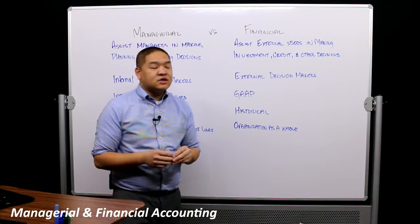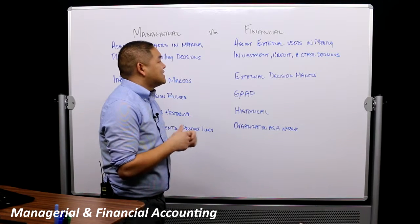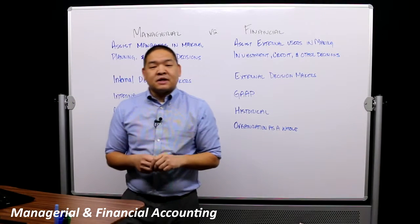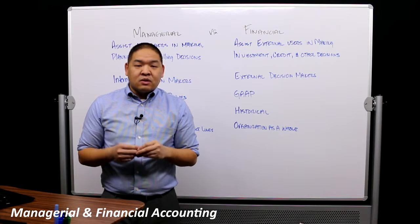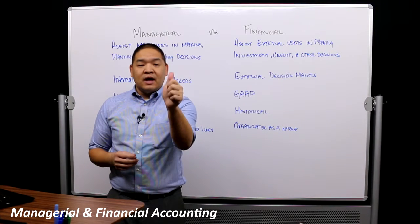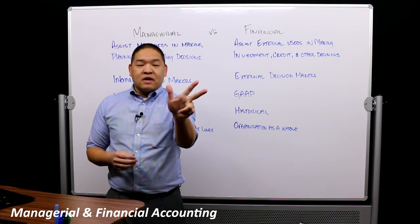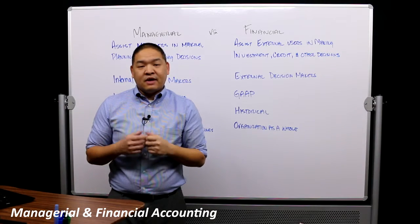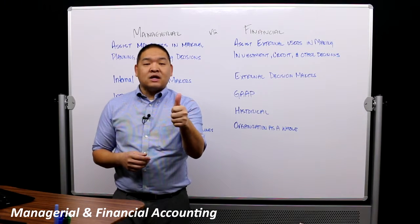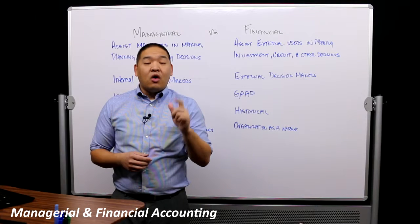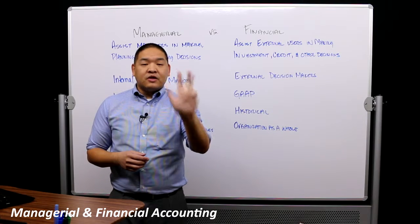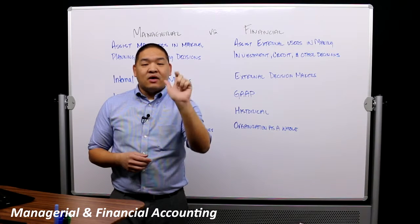Financial accounting is different — it's about assisting external users in making investment, credit, and other decisions. When it comes to financial accounting, we're talking about whether the external user is going to buy, hold, or sell. From an investor standpoint, they're deciding whether to buy more stock in the company, hold their current investment based on information provided by management, or sell.